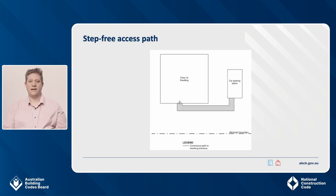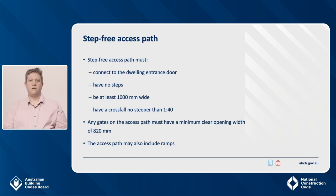Another option is to provide a step-free access path from a car parking space, provided it is for exclusive use by the dwelling occupants. This is suitable for steep sites and large allotments. In the scenario shown, the requirements for a step-free path must be met from the parking space to the dwelling entrance. The step-free access path must connect to the dwelling entrance door that complies with Part 2 of the standard, have no steps, be a minimum of 1000 millimetres wide, and have a crossfall no steeper than 1 in 40.